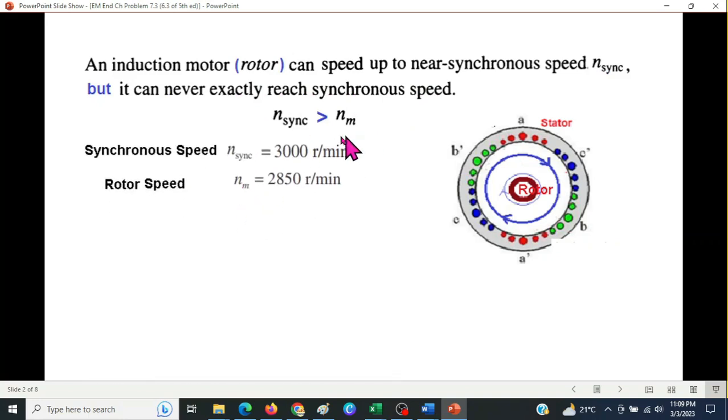To give you a little more idea, if the synchronous speed is 3000 and the rotor speed is slightly less, 2850, then the difference is called the slip speed. So in this case the slip speed is 150 revolutions per minute.